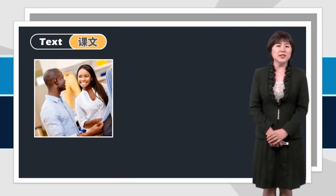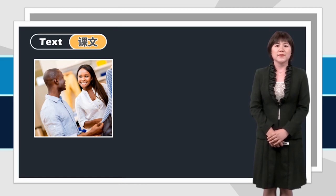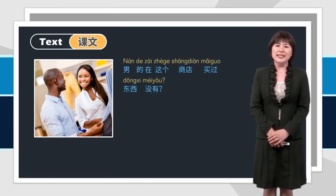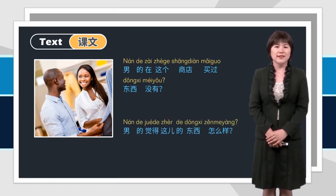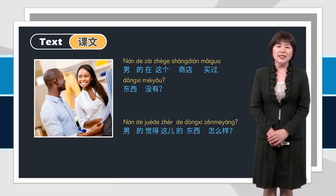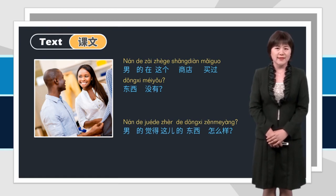Now let's come to the text. Look at the picture and listen to the dialogue. There are some questions for you: 男的在这个商店买过东西没有？男的觉得这儿的东西怎么样？Let's listen.